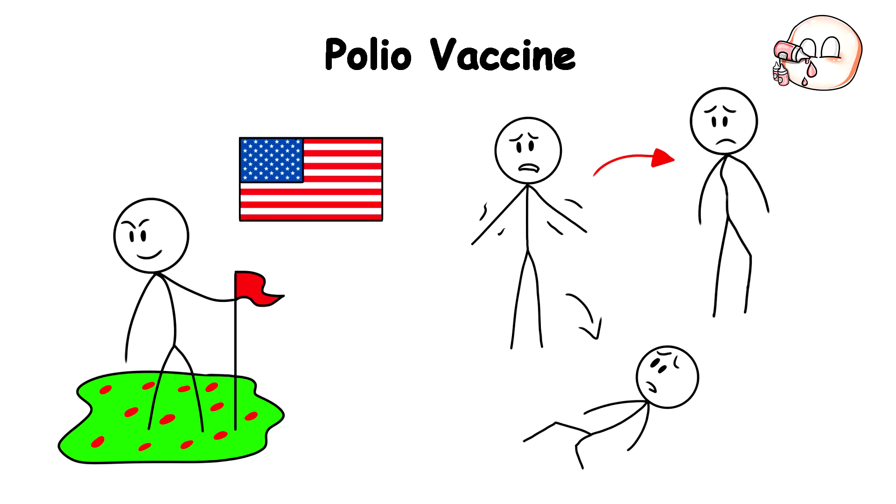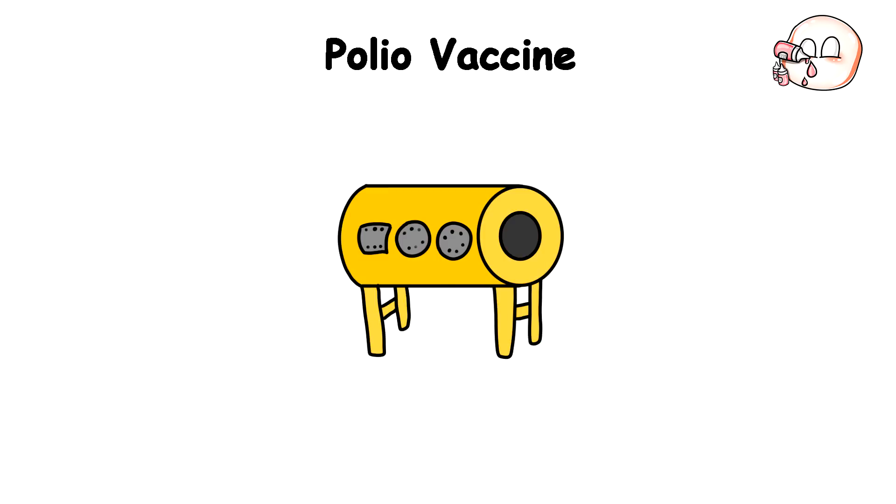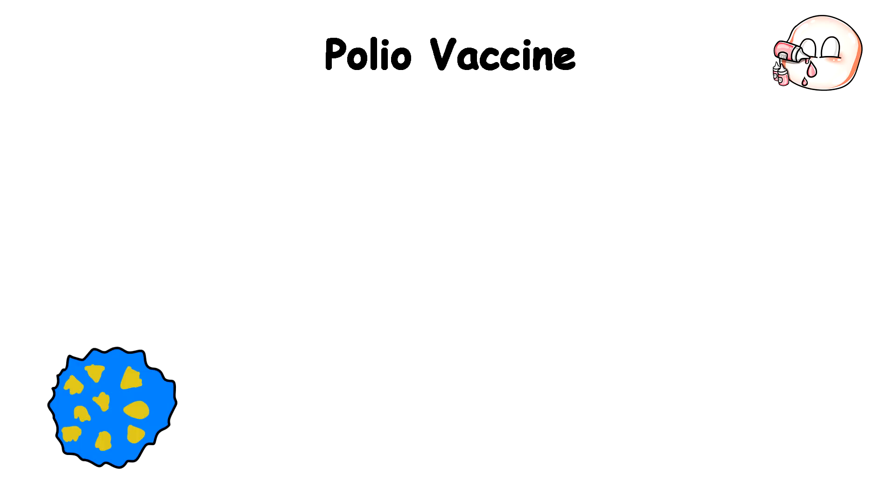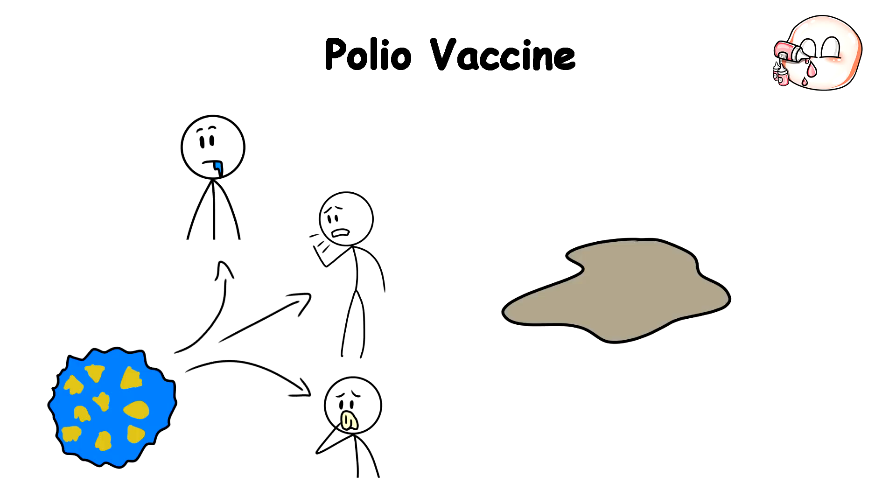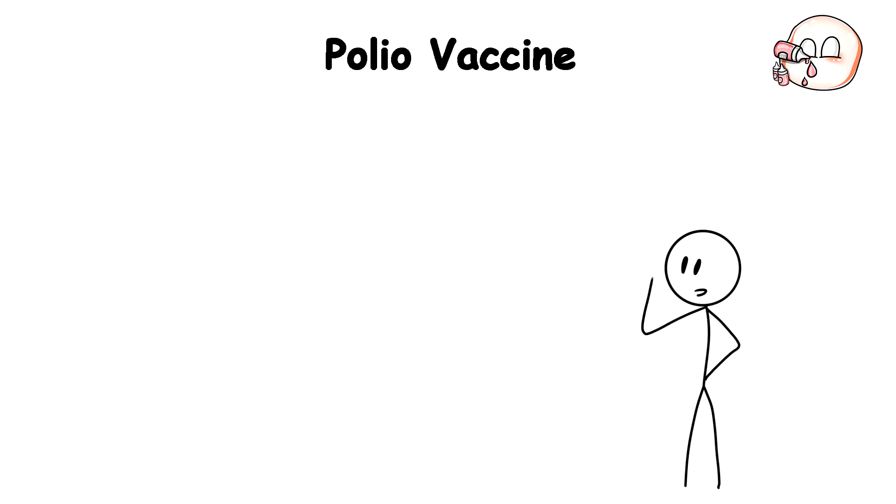It could cause paralysis and permanent disability, or put people in things called iron lungs, machines that helped disabled patients breathe. Polio could be spread through saliva, coughing, mucus, or even contaminated water. So you can imagine that everyone was scared out of their minds at its height.